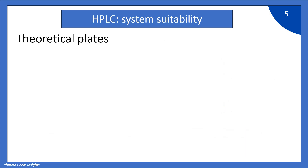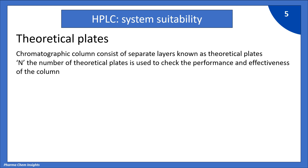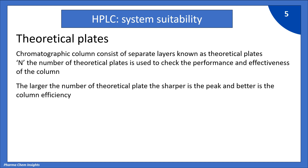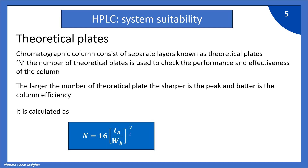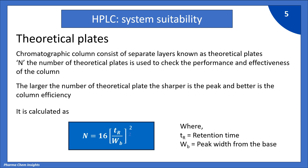Next parameter: theoretical plates. A chromatographic column consists of separate layers known as theoretical plates, and the number of theoretical plates is used to check the performance and effectiveness of the column. The larger the number of theoretical plates, the sharper is the peak and the better is the column efficiency. It is calculated as N = 16 × (TR / WB)², where TR is retention time and WB is peak width from the base.